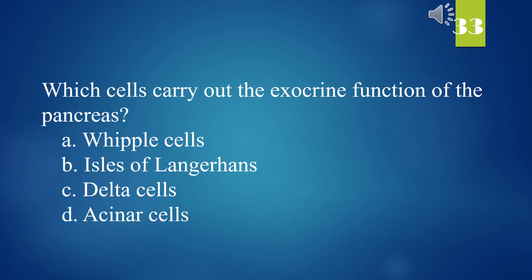Which cells carry out the exocrine function of the pancreas? A. Whipple cells. B. Islets of Langerhans. C. Delta cells. D. Acinar cells. The answer is D. Acinar cells.